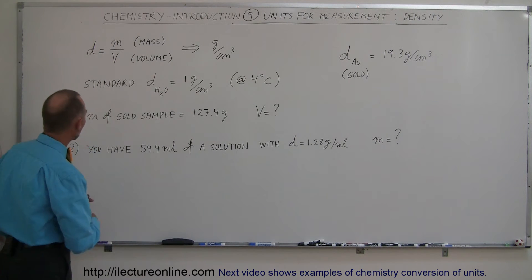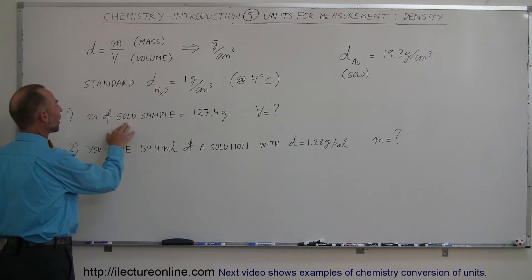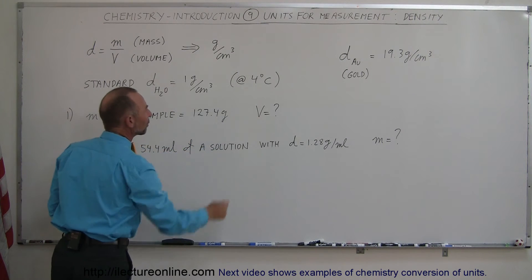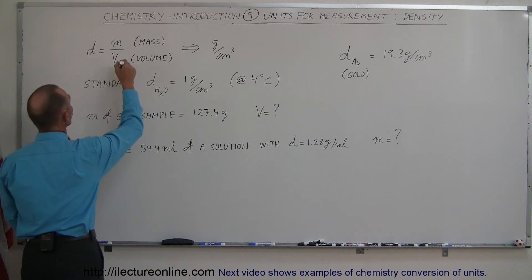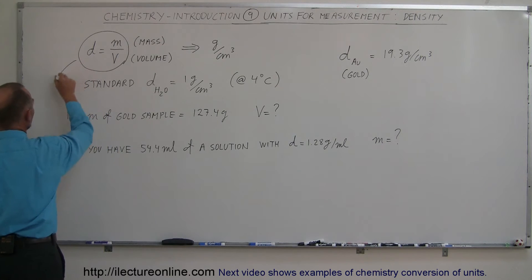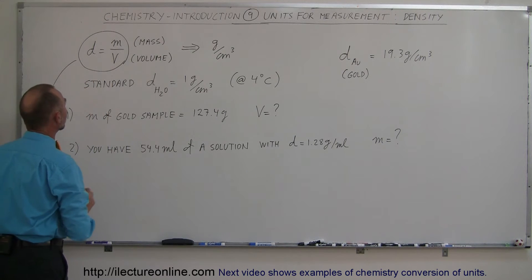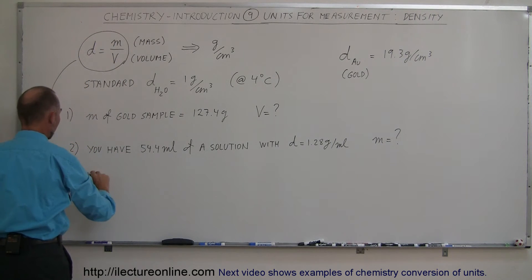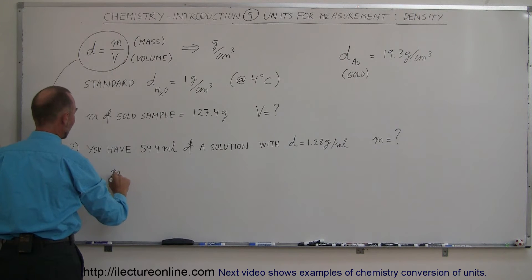For example, let's say we have a gold sample with mass equal to 127.4 grams, and we want to know what volume of gold we have. We go back to the equation where density equals mass divided by volume, and we can rearrange it. By cross multiplying, volume equals mass divided by density.